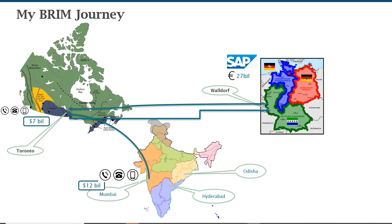Then I moved to North America — Canada — supporting another BRIM customer, one of the oldest BRIM customers ever, and spent about three years there. After that my career took me to Germany, where I was working on one of the largest BRIM implementations going on, internally in SAP — SAP itself uses SAP. Now I find myself back working for Bramasol, the BRIM avatar. The revenue values I've put in — 12 billion dollars, 27 billion euros, 7 billion dollars — indicate the revenue flowing through these BRIM projects.